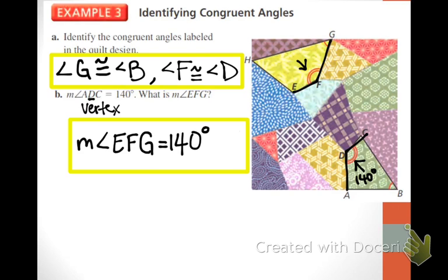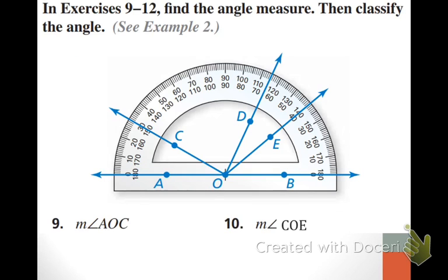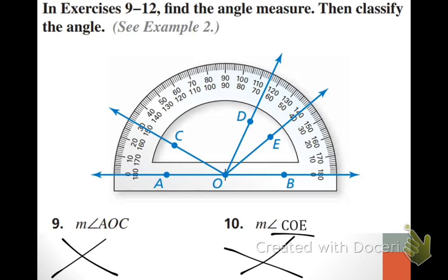We're going to go in an odd order. We were supposed to finish more yesterday than we did, so we're going to go to page five and then come back to this page. On page five you should see a protractor. This is actually the question from your homework. We're not doing problems 11 and 12 — put X's over those. I changed number 10. For our classwork, I'm going to do one similar to the question on your homework, but not the exact same question.